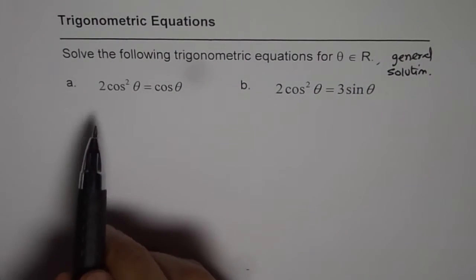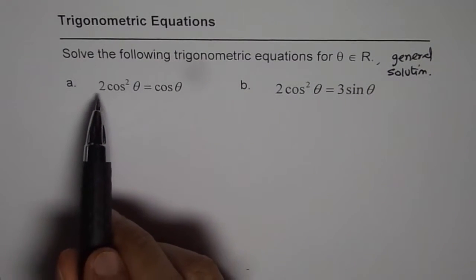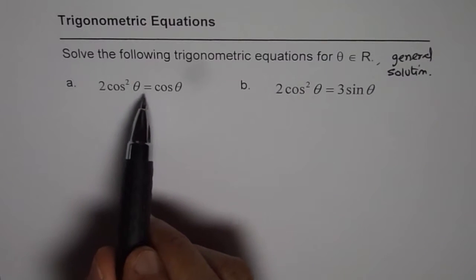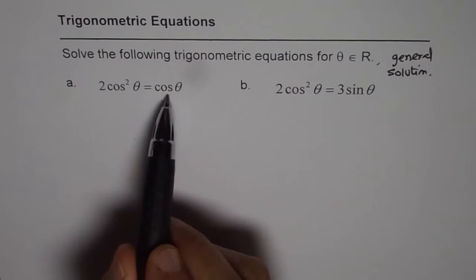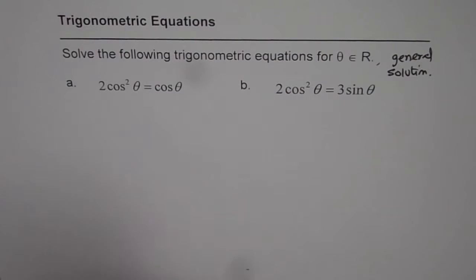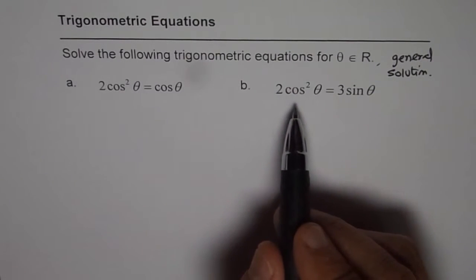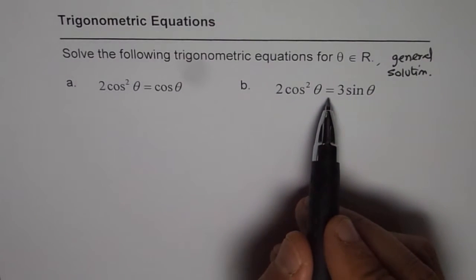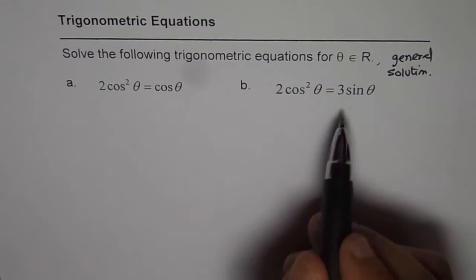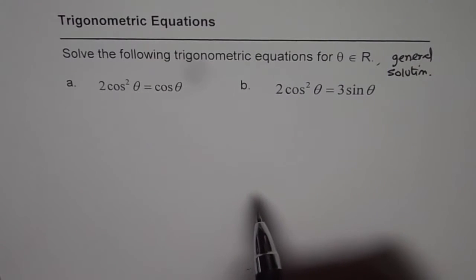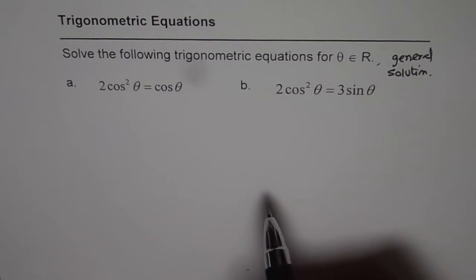The first equation is 2 cos squared theta equals 2 cos theta. The second equation is 2 cos squared theta equals 3 sin theta. Let us see how to solve these.